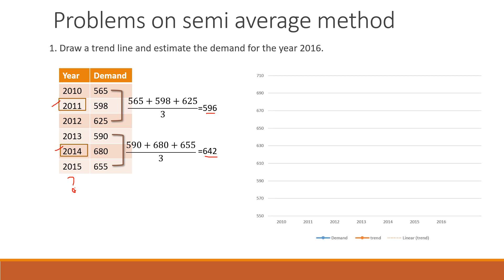Now let us see the graph. While drawing a graph, we have to write a title and scale. The x-axis represents year where 1 centimeter equals 1 year, and the y-axis represents demand where 1 centimeter equals 20 units. The scale follows: from 550 to 570 spans 1 centimeter, so 1 millimeter equals 2 units — giving values 552, 554, 556, 558, 560, 562, 564, 566, 568, 570. According to that scale, we mark the data.